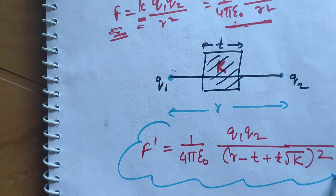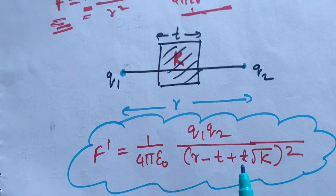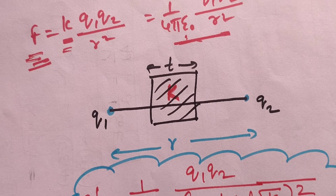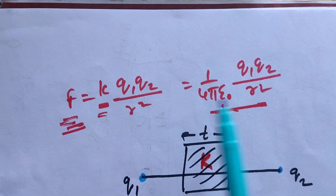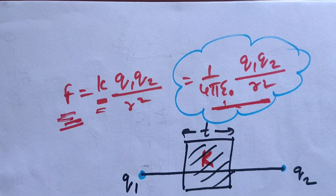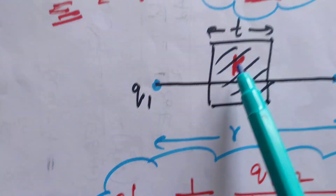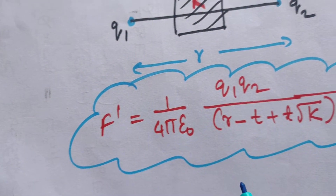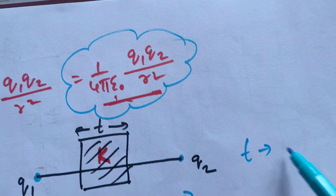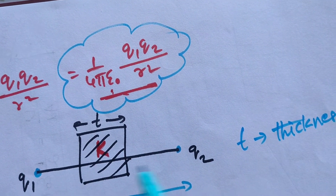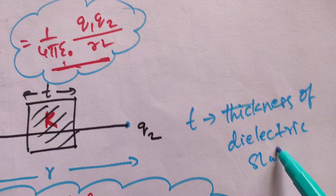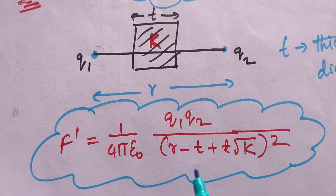We can use this shortcut formula to find the force when a dielectric medium of dielectric constant K is introduced between two charges separated in vacuum. Without a dielectric medium in vacuum, force = 1/(4πε₀) × Q1Q2/R². With a dielectric slab of thickness T, force = 1/(4πε₀) × Q1Q2/(R − T + T√K)². Please remember this shortcut formula.